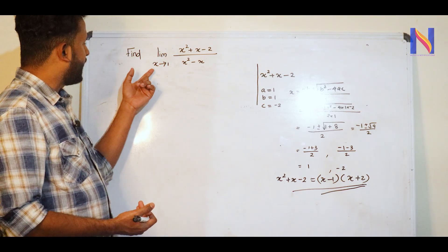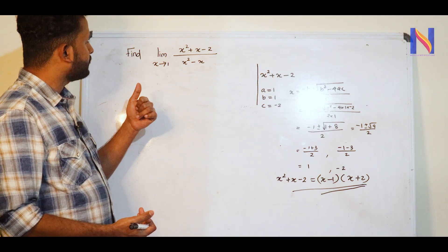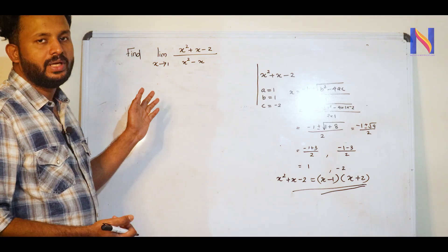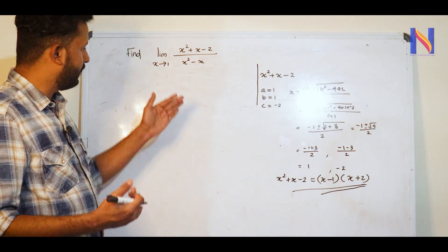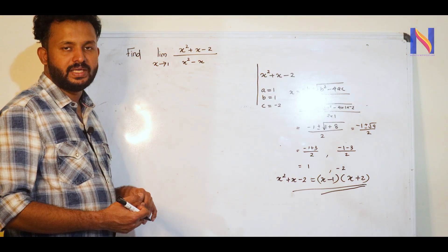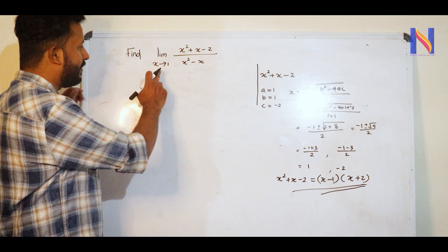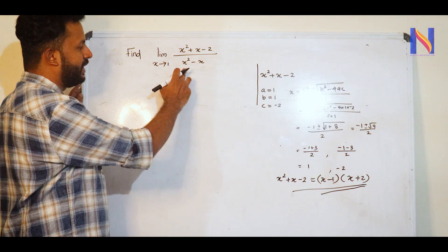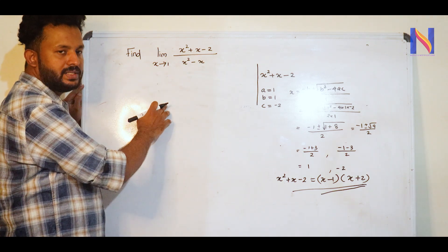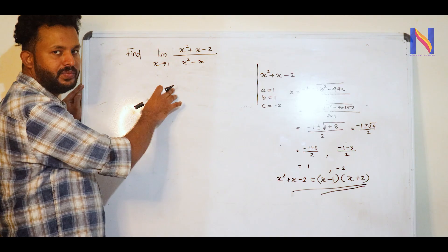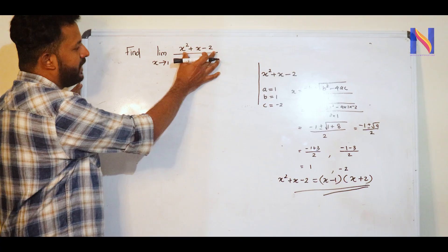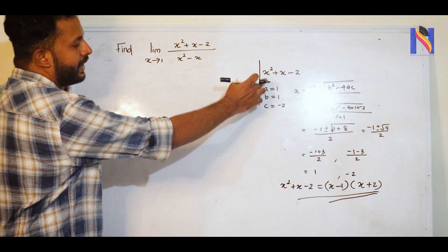The next question is: find the limit as x tends to 1 of (x² + x − 2) divided by (x² − 1). If we directly substitute x = 1, we get 1² − 1 = 0 in the denominator, so we need to factorize. What we do is factorize x² + x − 2.